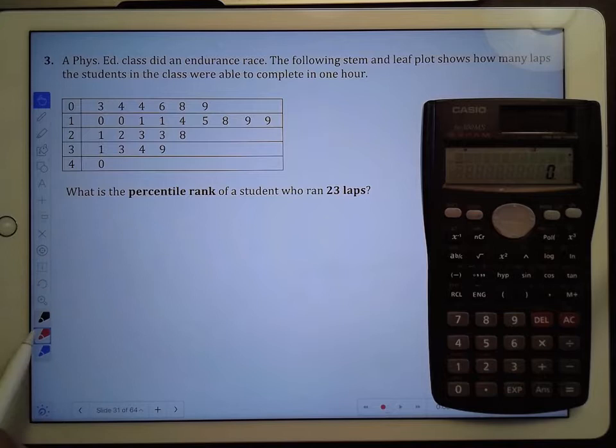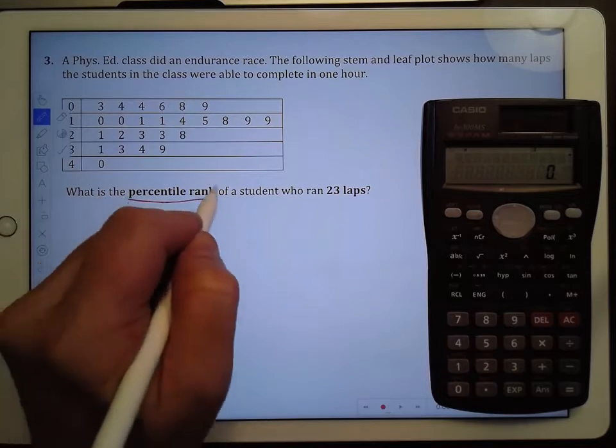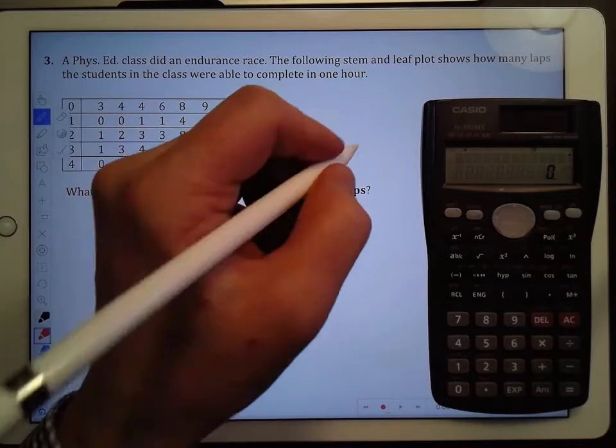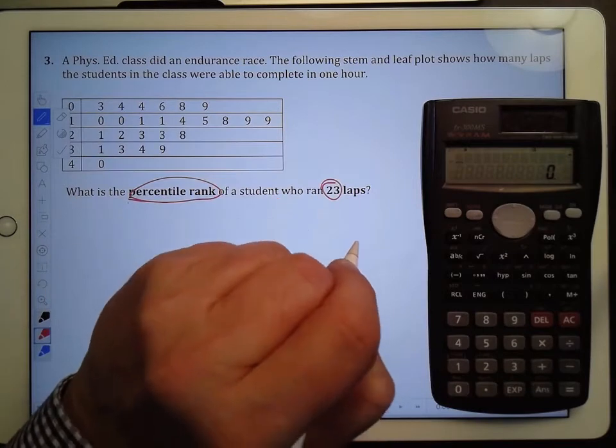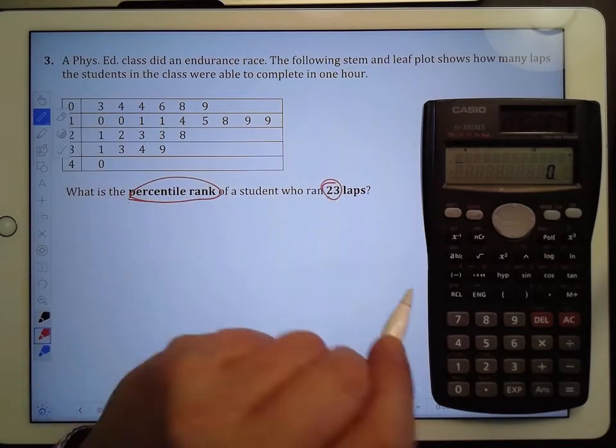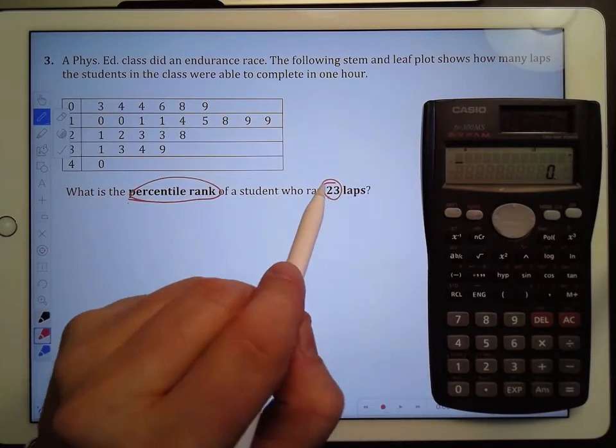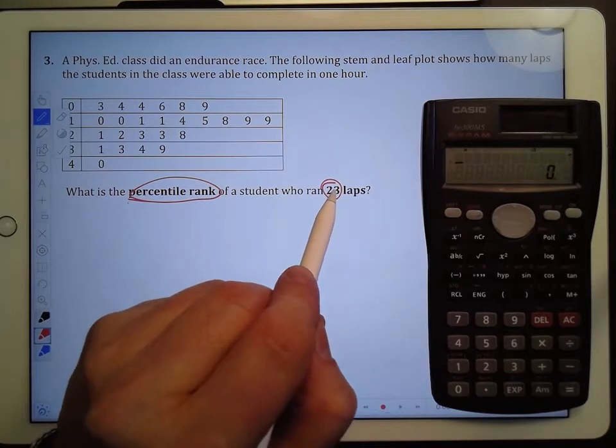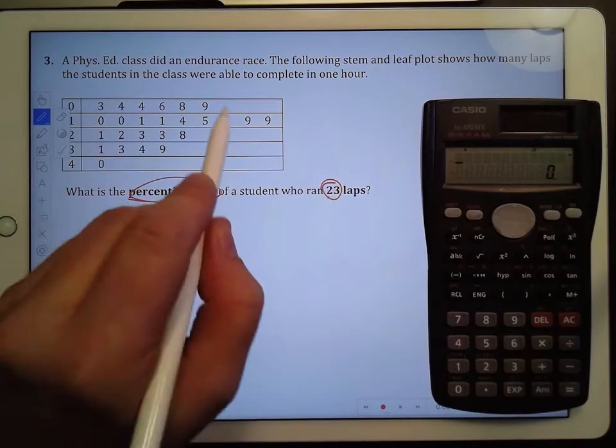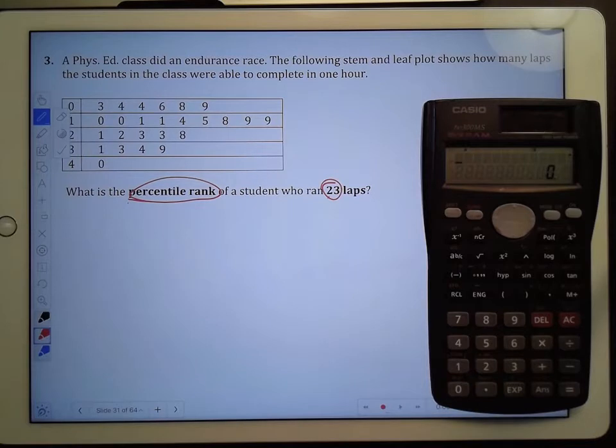So the question then becomes, what is the percentile rank of a student who ran 23 laps? This is our target value right here and the one that we're going to be figuring out its percentile. So who does it beat or tie in this distribution of numbers in the stem and leaf plot?